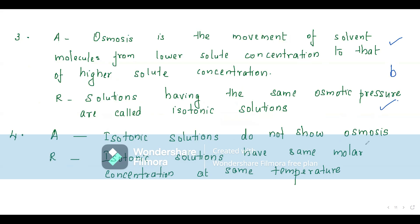Assertion: isotonic solutions do not show osmosis — which is true because they have the same concentration, so solvents cannot flow from higher to lower concentration. Reason: isotonic solutions have the same concentration — that is also correct. This will be option A: both assertion and reason are correct, and reason is the correct explanation for assertion.